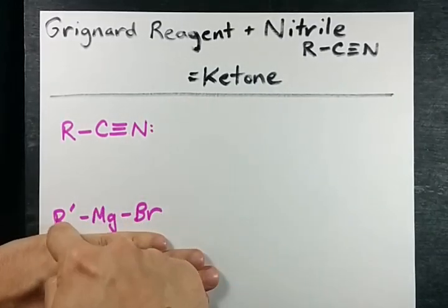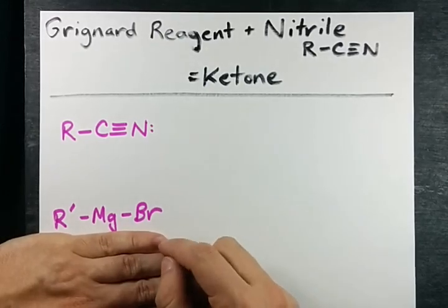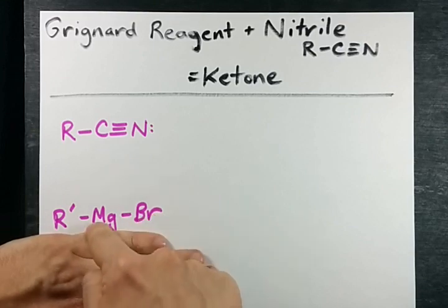We have a Grignard reagent here that is an alkyl chain, different length, could be the same length, I don't really care, neither does chemistry, where you have an Mg and a Br attached to it.